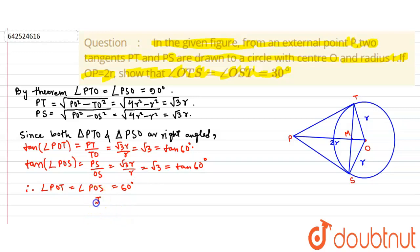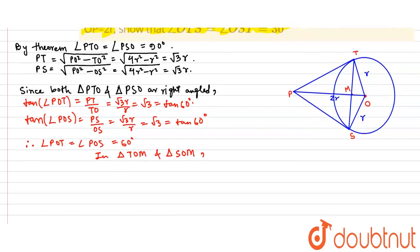Now in triangle TOM and triangle SOM, we can prove that they are actually congruent. Now TO equals SO, both are radius.